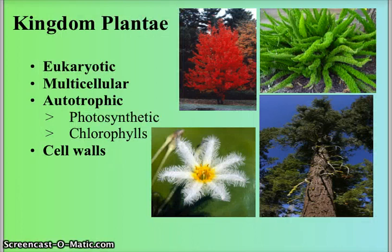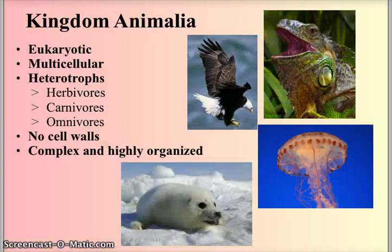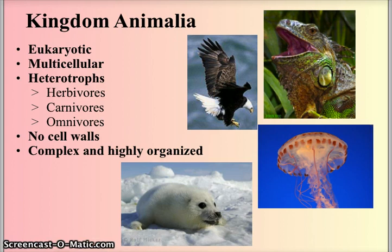The plant kingdom are all eukaryotic, multicellular, and autotrophic — photosynthetic because they contain chlorophylls — and all have cell walls. The final kingdom is the kingdom Animalia, which are eukaryotic, multicellular heterotrophs, which could be herbivores eating plants, carnivores eating meat, or omnivores eating anything available. They have no cell walls and are complex and highly organized in their development.